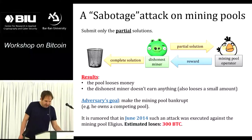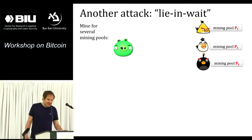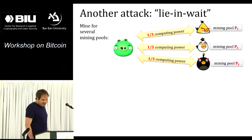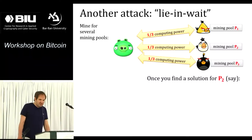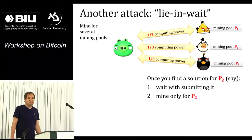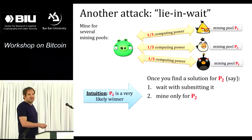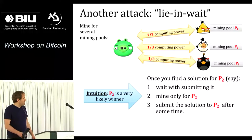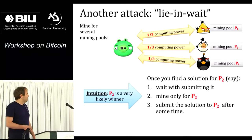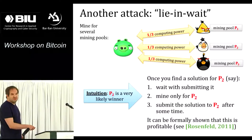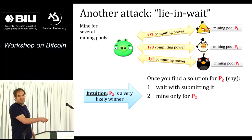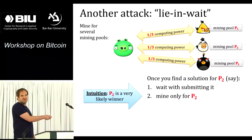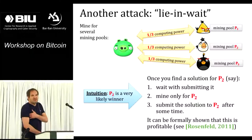Another attack is called lie-in-wait. I mine for several mining pools simultaneously, devoting one third of computing power to each of three pools. When I find a solution for P2, I wait before submitting it and now mine only for P2. The result is that I know P2 is likely to win because I already have a complete solution for him. I submit the solution to P2 after some time, like 30 seconds. Since I'm now mining only for P2, I know which pool is going to win, and I'm getting paid for each share in that winning pool. The paper by Meni shows this is profitable.